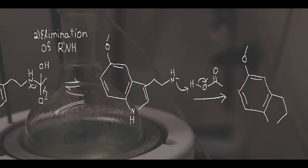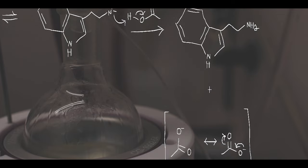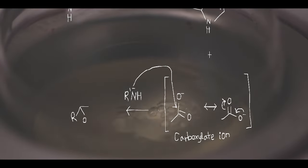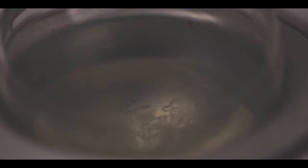The nucleophilic nitrogen of the deacylated melatonin then attacks the carboxyl hydrogen, deprotonating the carboxylic acid, leaving a resonant stabilized carboxylate ion no longer susceptible to further nucleophilic attack and the 5-MeO-tryptamine product.